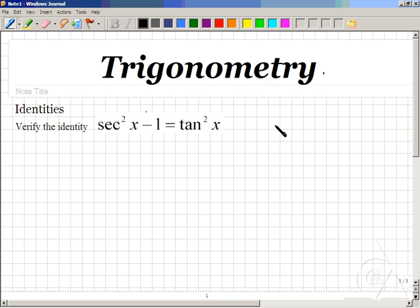Now one common method of verifying identities is to rewrite the common trig functions in terms of sines and cosines.